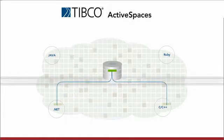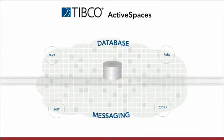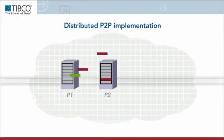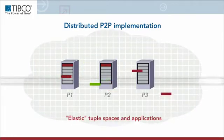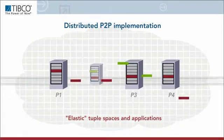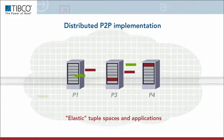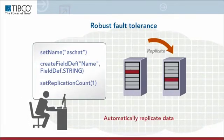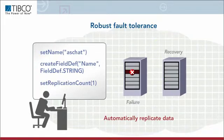In other words, TIBCO Active Spaces unites database and messaging capabilities. TIBCO's distributed peer-to-peer implementation makes the Tuple Space and applications elastic. You add or remove memory and compute resources on the fly by starting or stopping peer instances of your application. It's easy to create spaces with robust fault tolerance that automatically replicate data and recover from failure on their own, without any intervention.